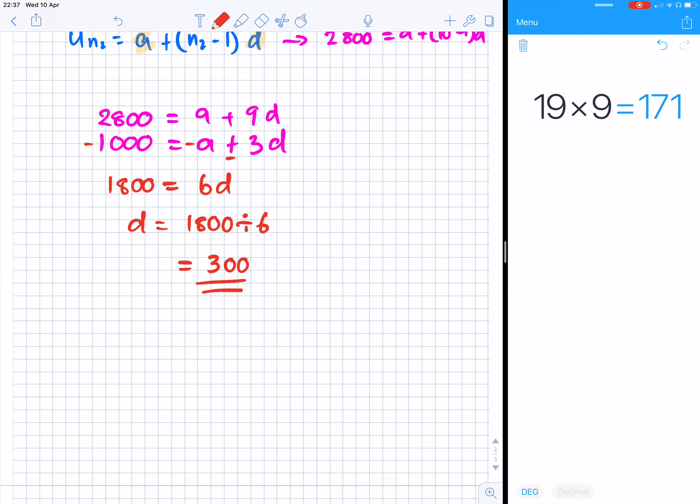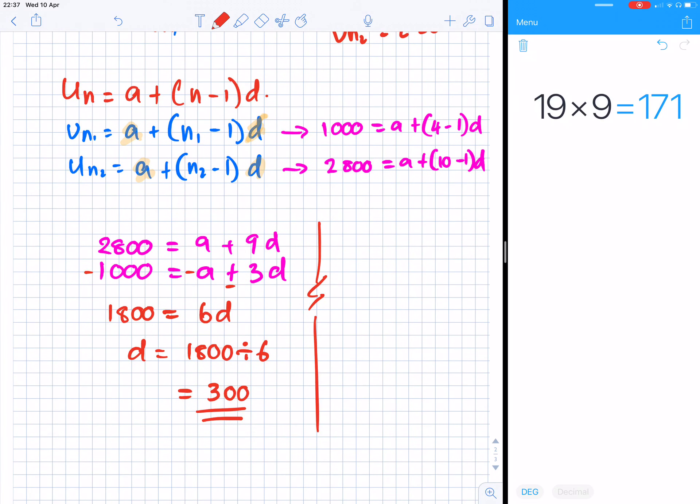Now if d is 300, I could go to the first equation. 1000 equals a plus 3d, which means 1000 equals a plus 3 times 300. 3 times 300 is 900, so a plus 900 is 1000, which means a is 100. So there we found the two values for a and d.